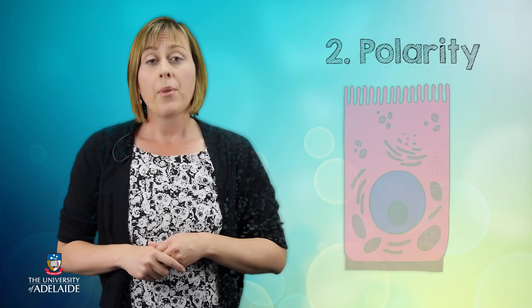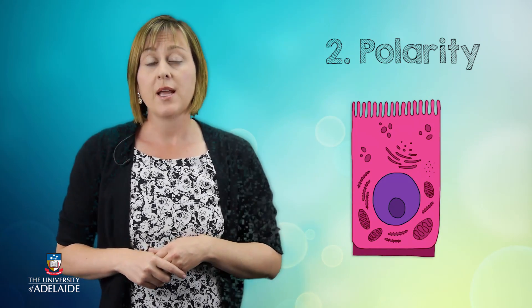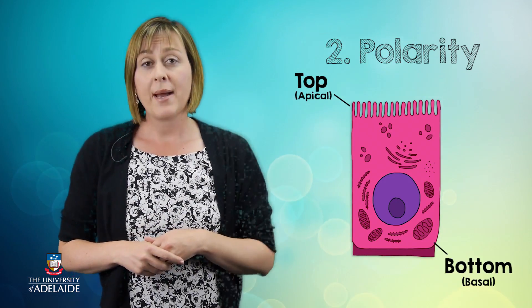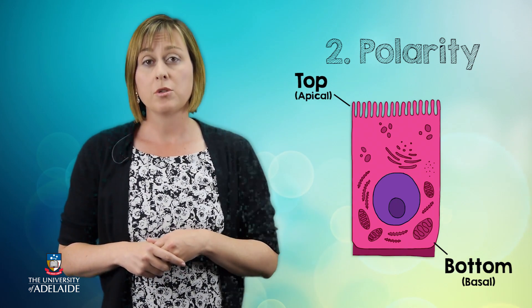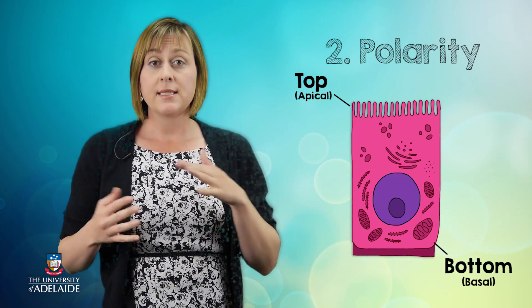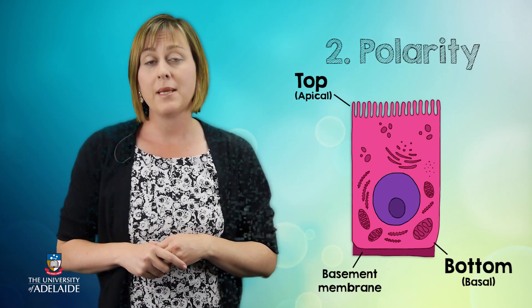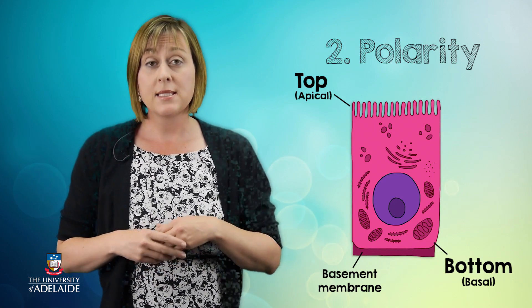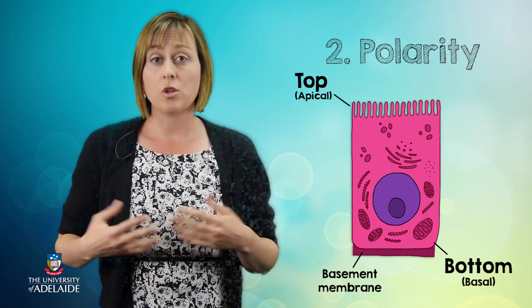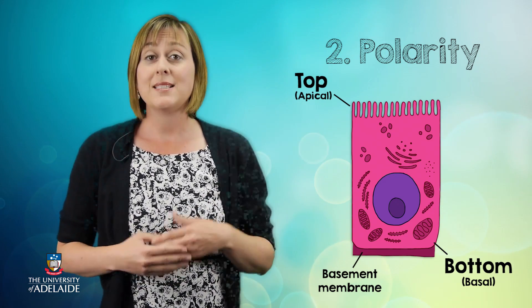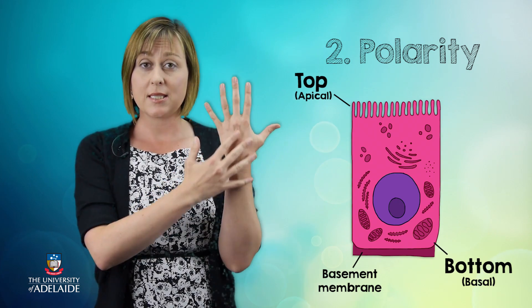Another key characteristic of epithelial tissue is polarity. Polarity means that the cell looks different at the top than at the bottom. Basal means base or bottom, and this part of the cell is sitting on a basement membrane. Apical means apex or top, and it's this part of the cell which faces the lumen, such as in the intestine, or faces the external body, such as the skin.